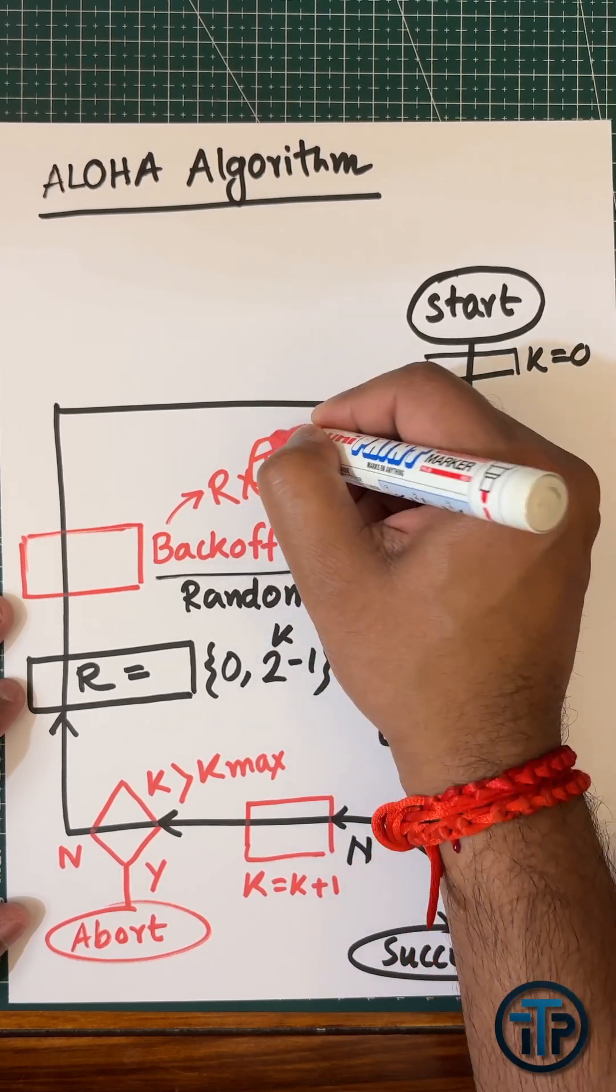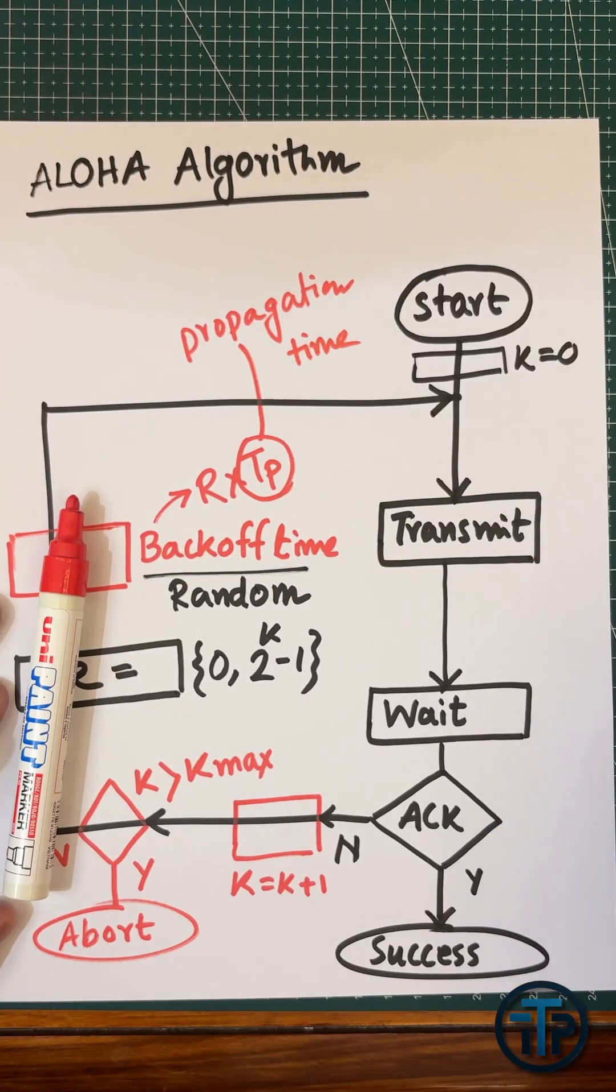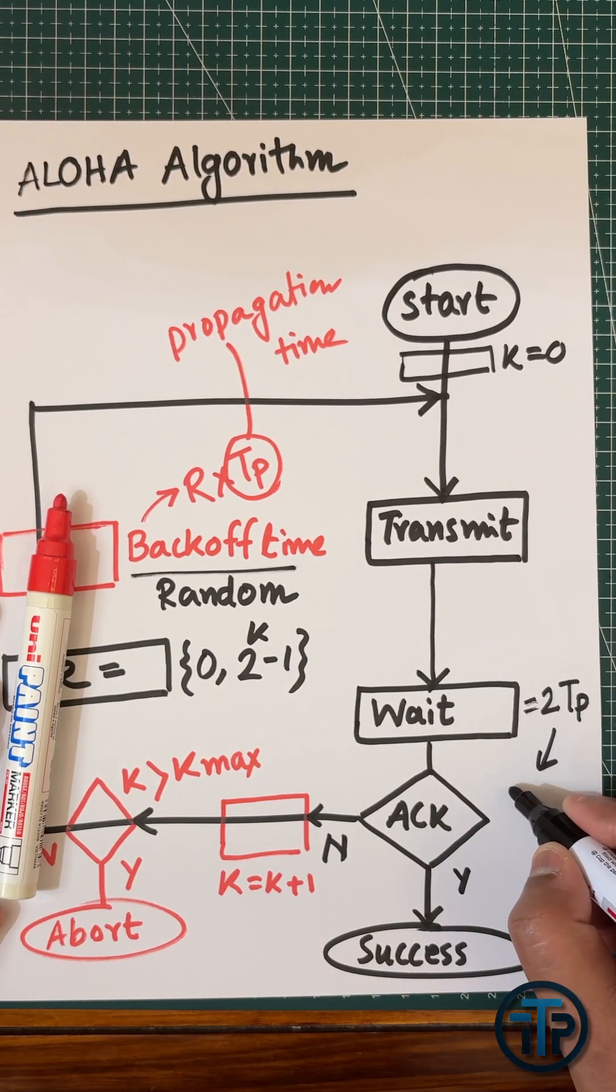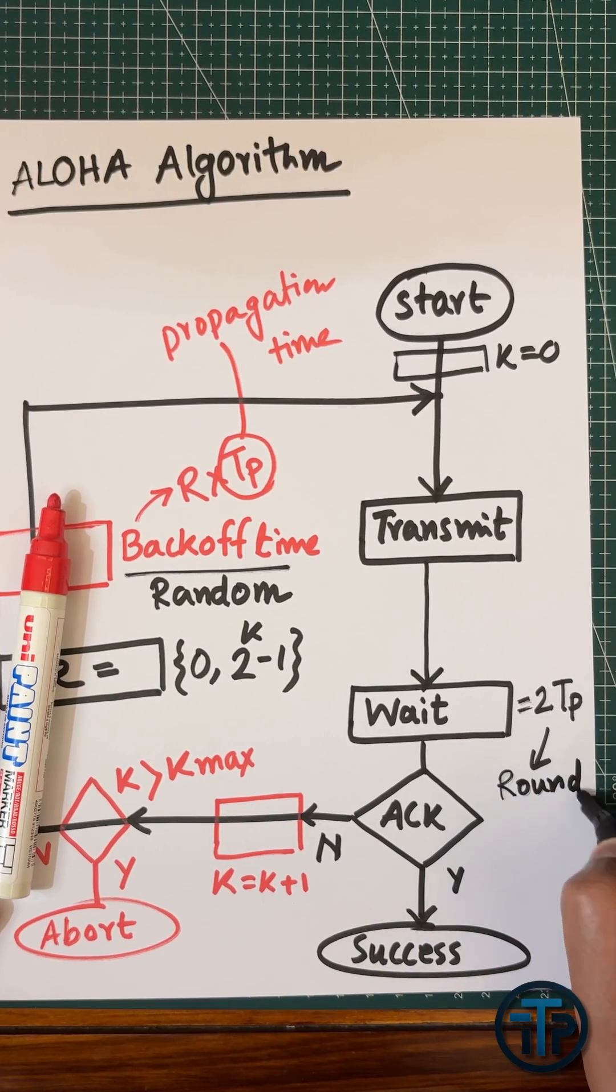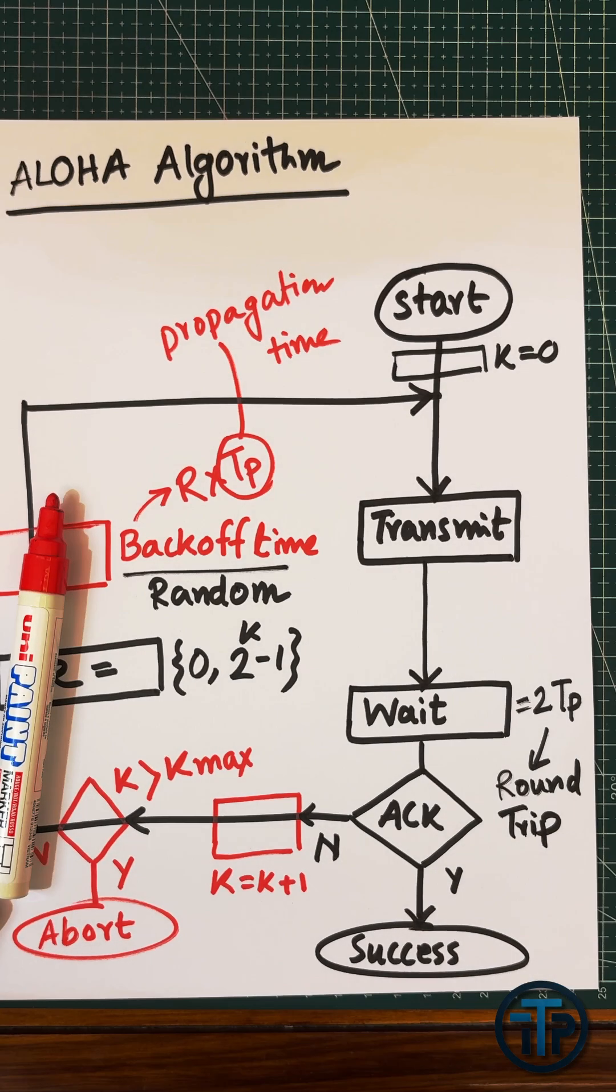is your propagation time. Basically, if you're talking about 2 × Tp, that is your round trip time.